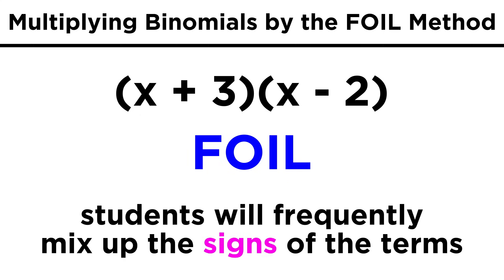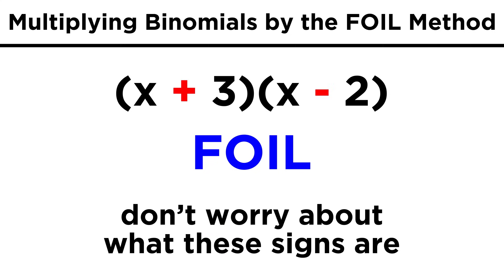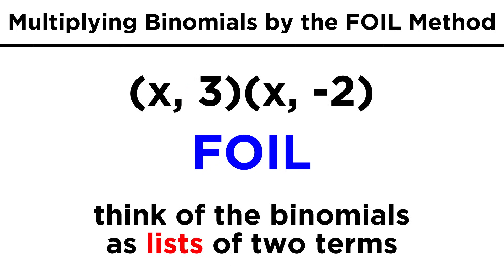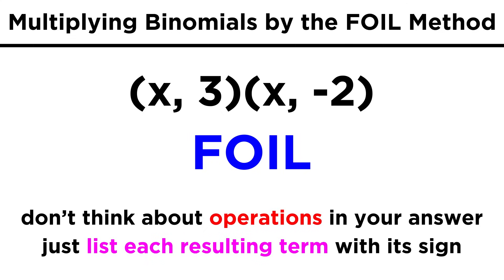The most common error when FOILing is certainly listing the wrong sign for a particular term. Don't get confused by the plus or minus in between the terms of the binomial, just think of the binomial as a list of two terms, each with a particular sign. When multiplying terms, don't think about whether the terms in the resulting list will be added or subtracted, just list the result with its sign, whether positive or negative, and the operations will take care of themselves.